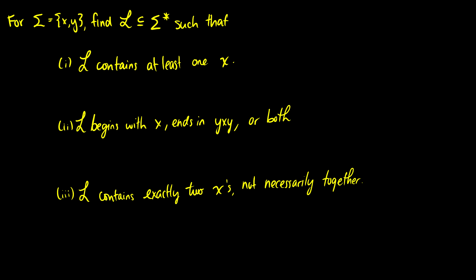So we know that at some point there has to be an x. Before it, we can have any number of x's and y's, so (xy)* on the left. On the right we can also have any number of x's and y's. This gives us a language that accepts anything with at least one x — we can have anything, then we must have an x, then we can have anything after it.